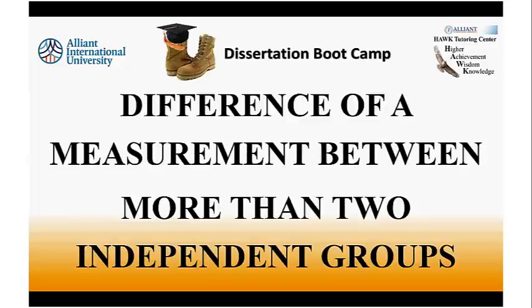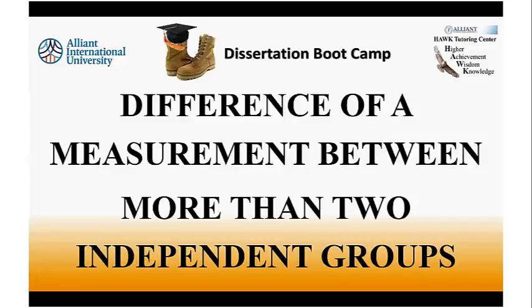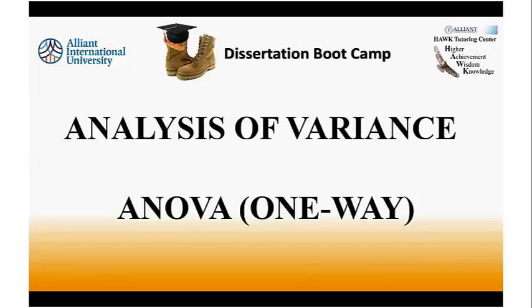Whenever you see the word 'difference,' all your independent variables are going to be categorical. An independent t-test covers two groups — the 't' stands for two. If you have more than two groups, you use the ANOVA — the analysis of variance, a one-way ANOVA. We have about 500 videos on the Hawk Moodle showing you how to do every test, by hand, in Excel, or with SPSS.